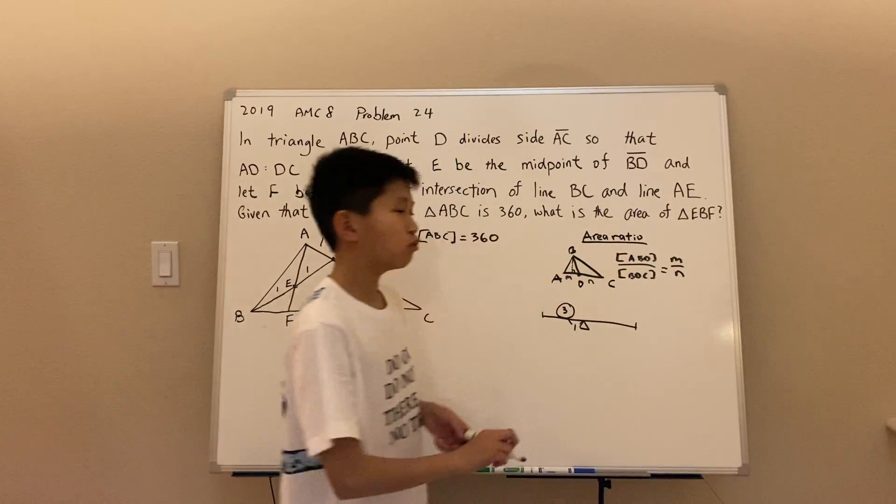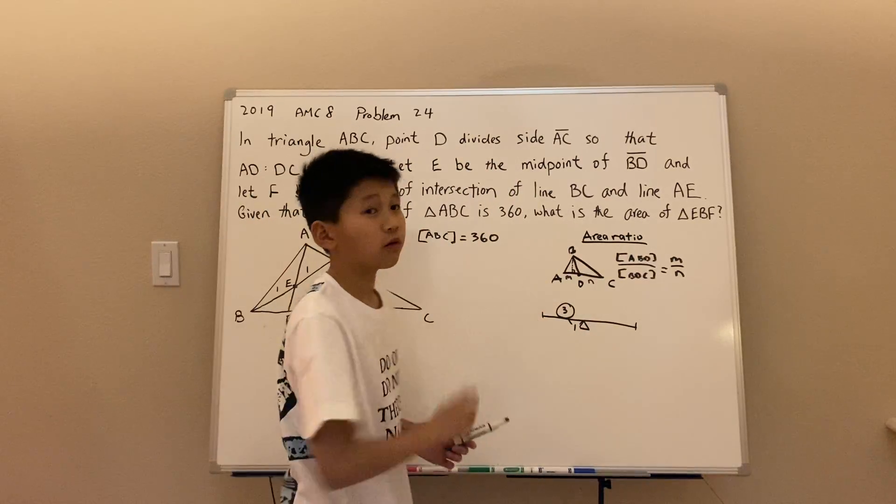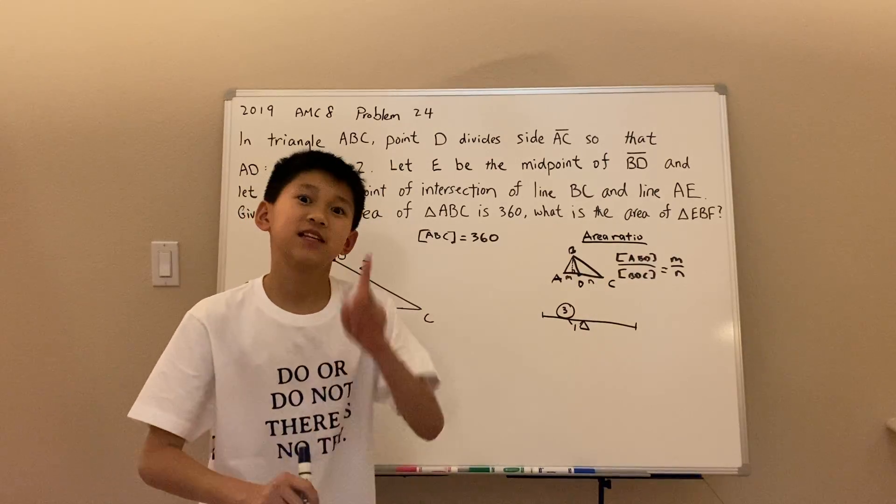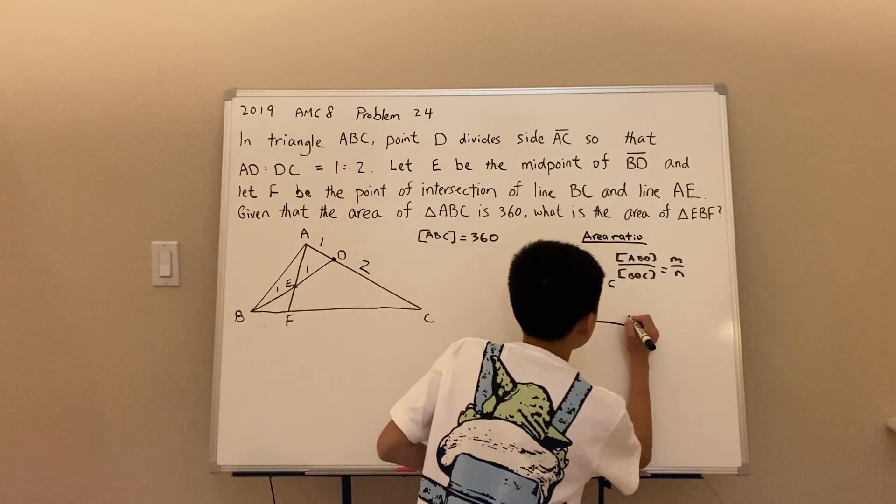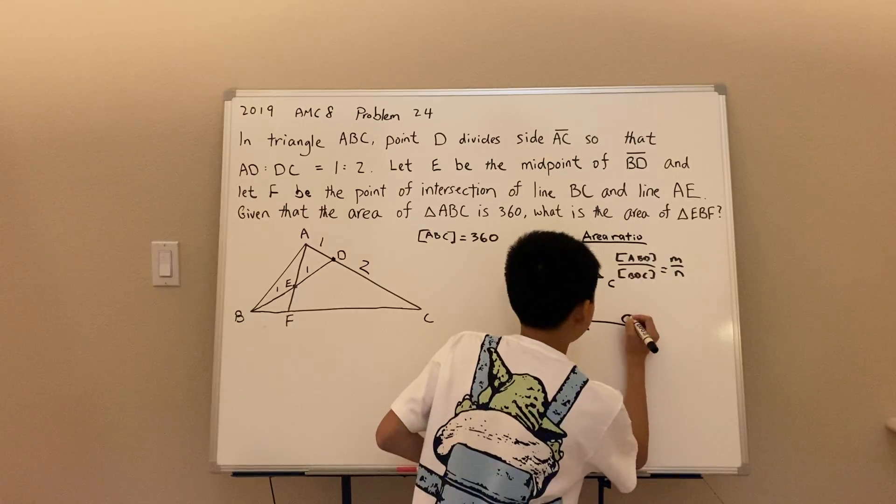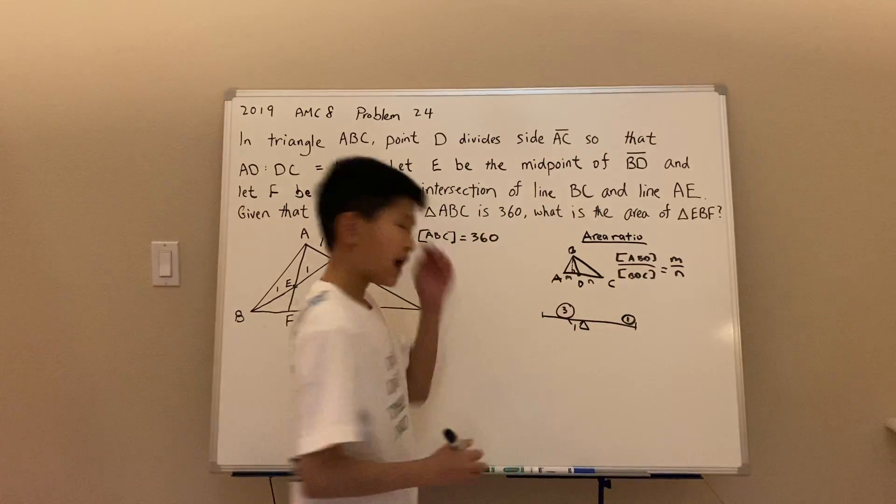And let's say he is one distance away from the fulcrum. Then the lighter person, let's say he is weight one, he has to be farther away from the fulcrum to balance the seesaw out. And how far away?